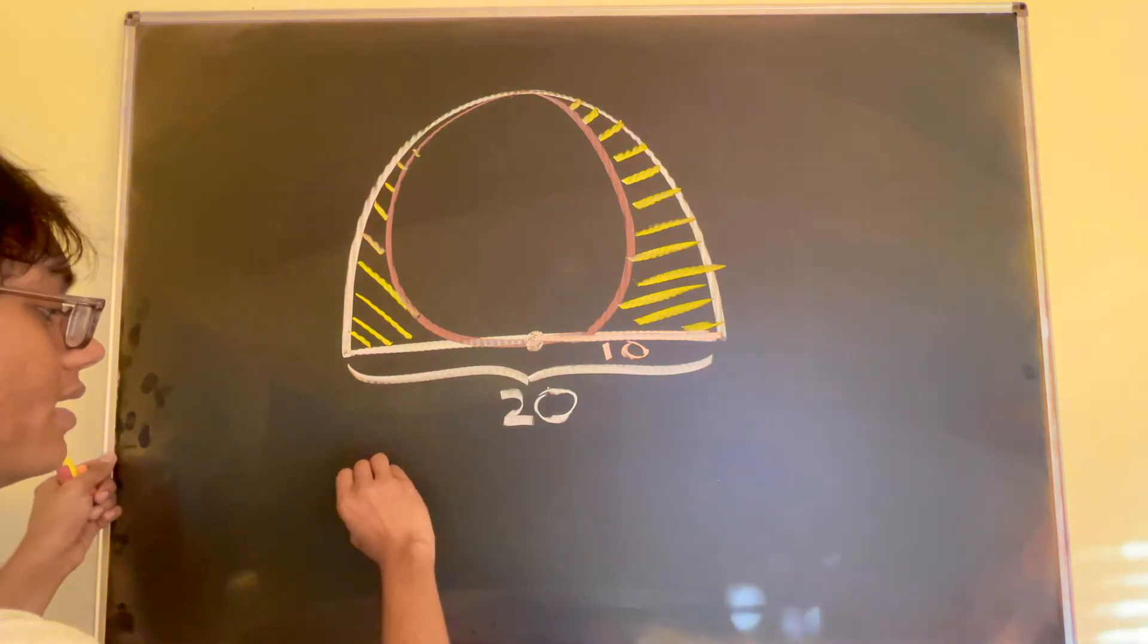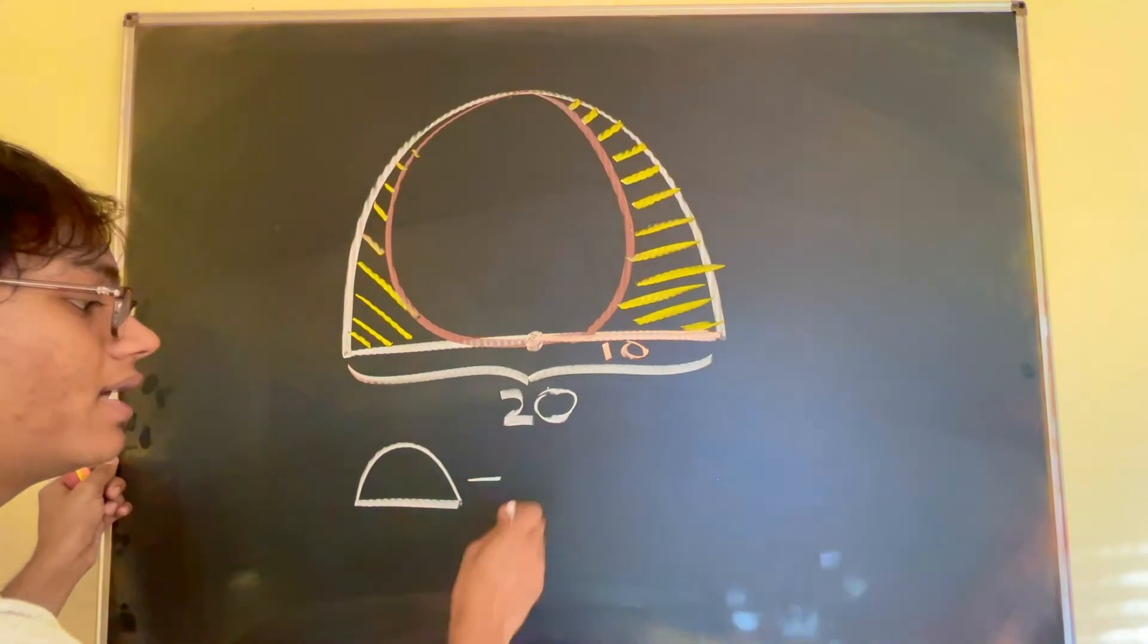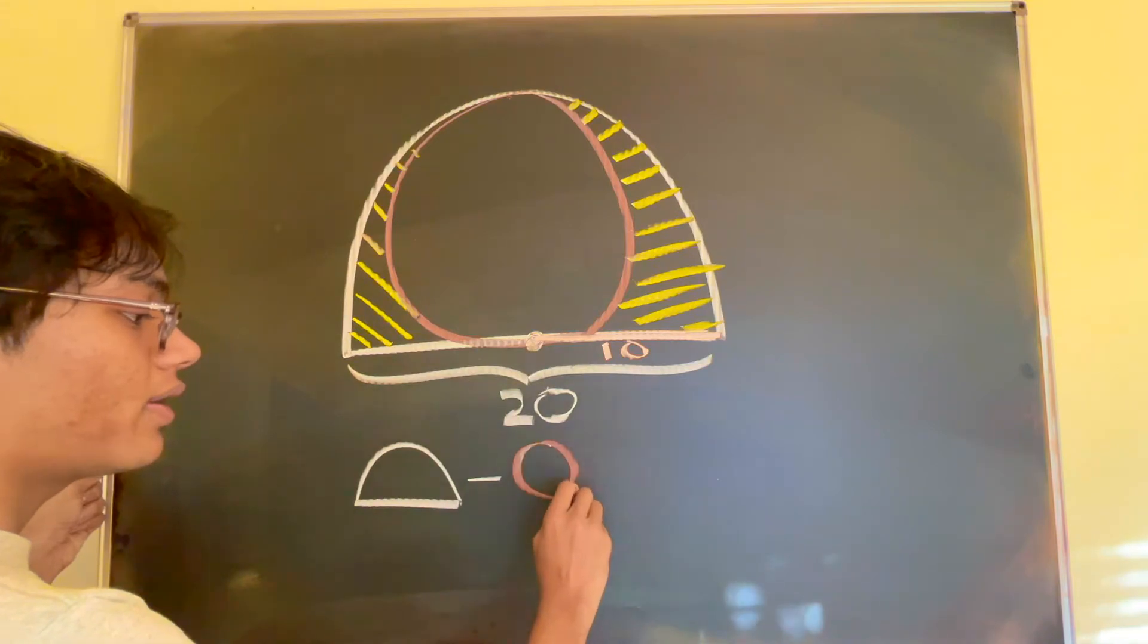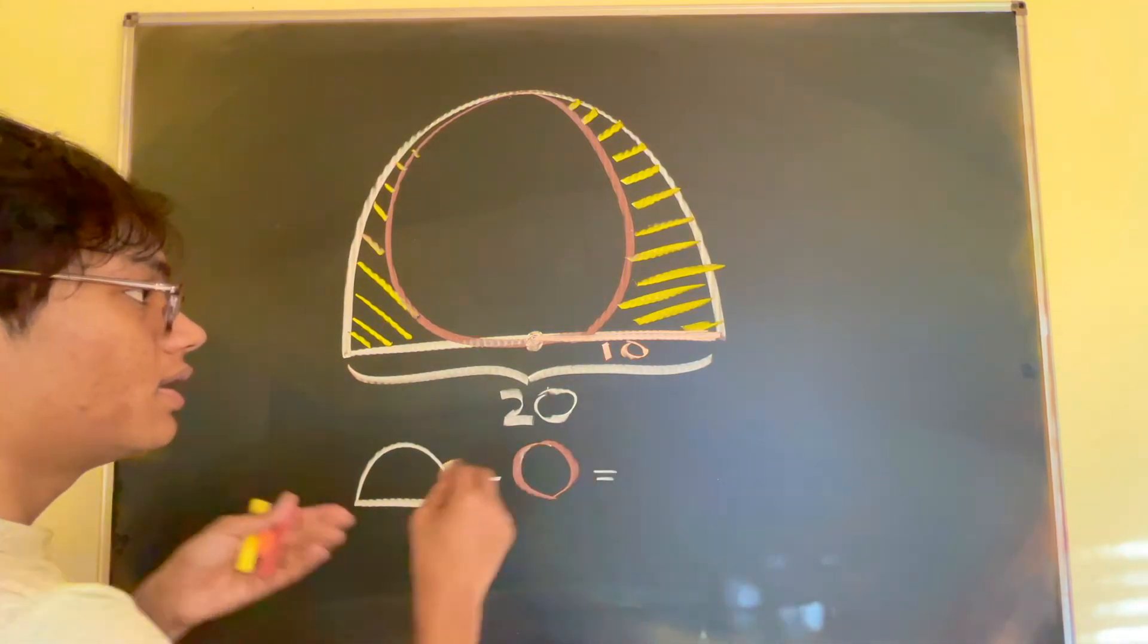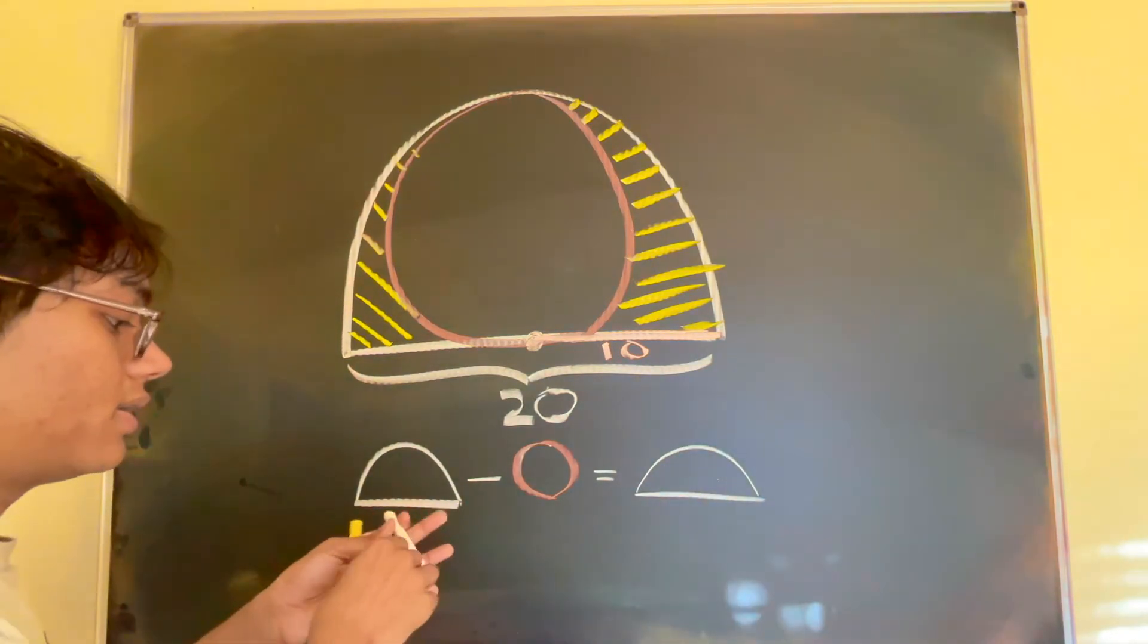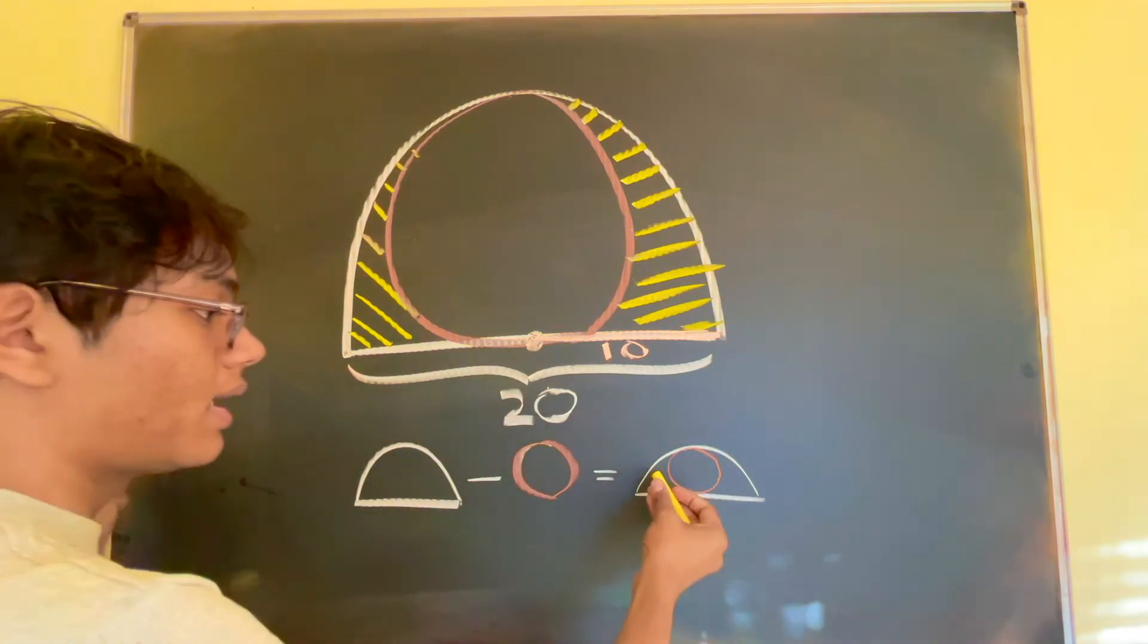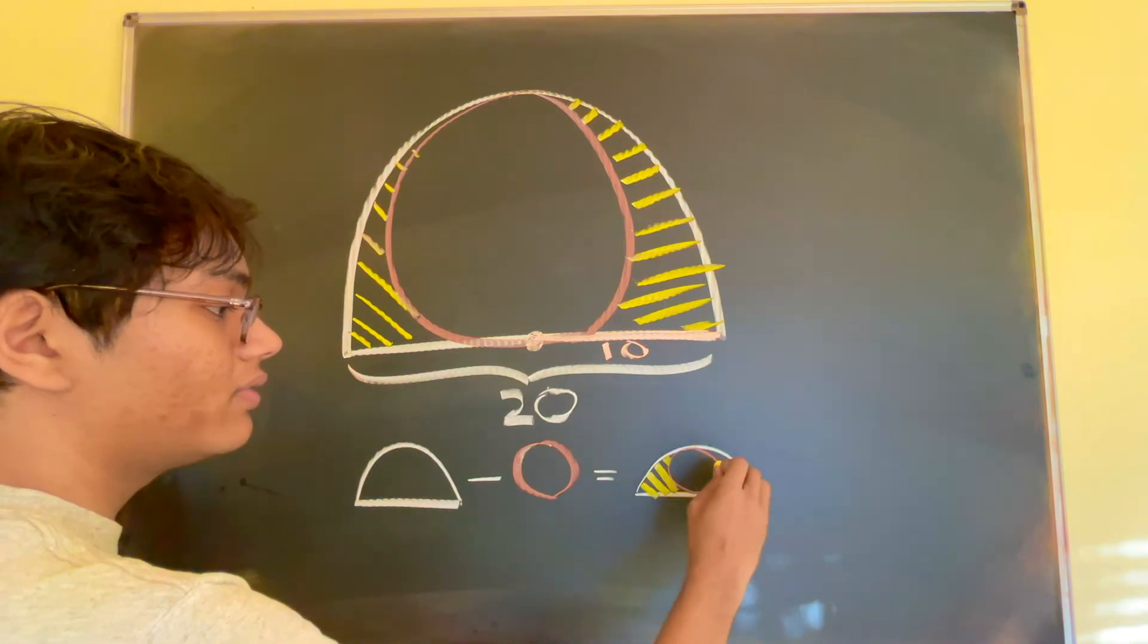So if we take the area of the semicircle and subtract from it the area of our brown circle we will be left with the shaded region. And so this will be equal to the area of the shaded region which is going to be drawn in yellow. And that is of course the region we want to find the area of.